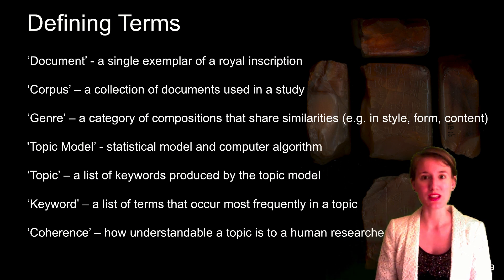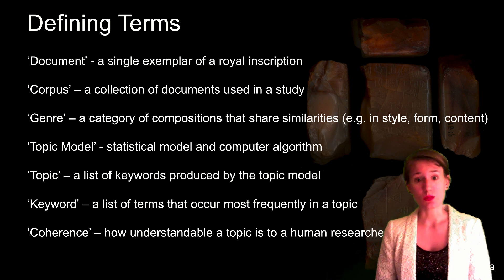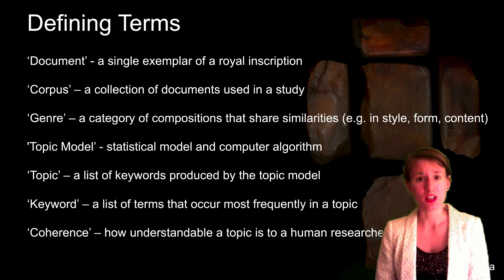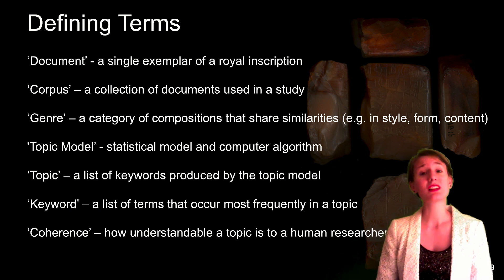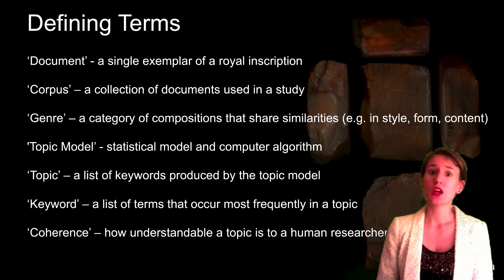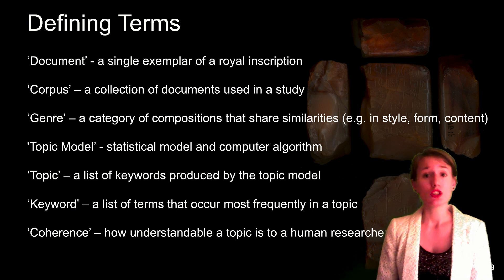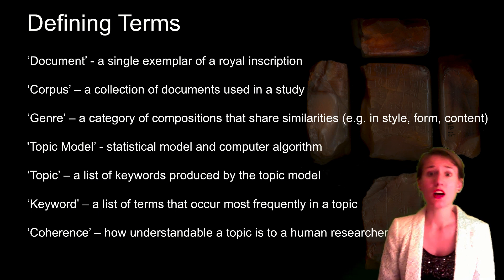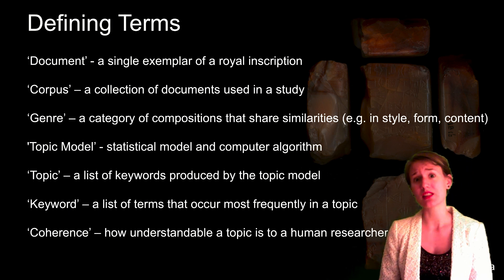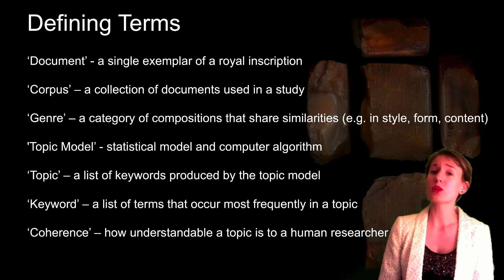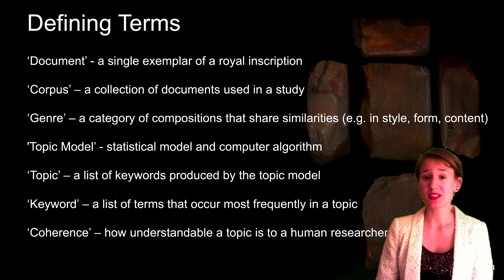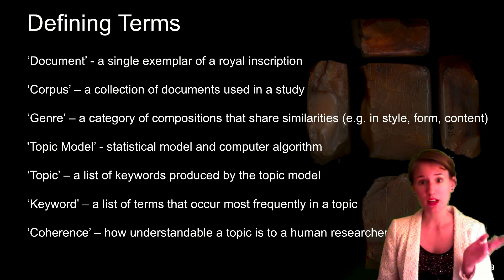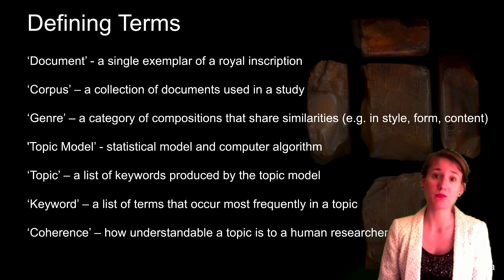Before diving in, it's worth taking a minute to define some terms. A document can be a complete text, a chapter of a book, or even a single post from a social media platform. In this paper, a document is simply a single exemplar of a royal inscription, meaning that several documents can contain the same text. A corpus is the complete collection of documents used in a study. Genre is understood as a category of compositions that share similarities in either style, form, or content. A topic model is a statistical model used to identify latent patterns that exist in a written corpus, and it produces topics — lists of words. The topics are differentiated and expressed by these lists, their keywords, which are the most frequently occurring terms within a topic. Finally, topic coherence is a measure of how easily understood a topic is by a human researcher.